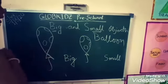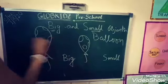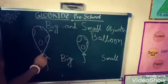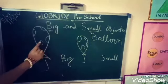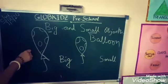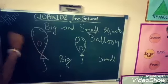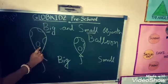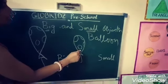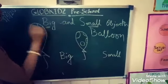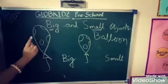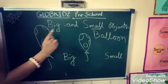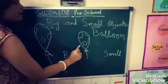Now look at these balloons. There are two balloons. Which one is the big in size? The first one. This one is big in size and the second one is small in size. This is a big balloon and this is a small balloon.